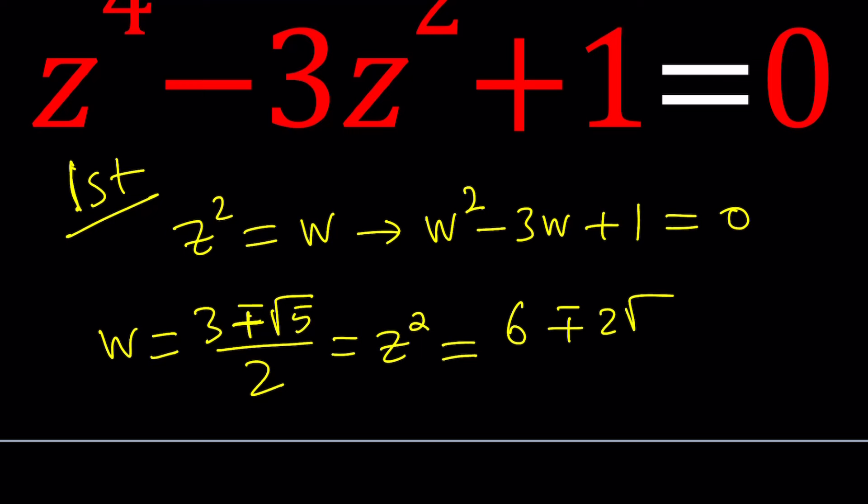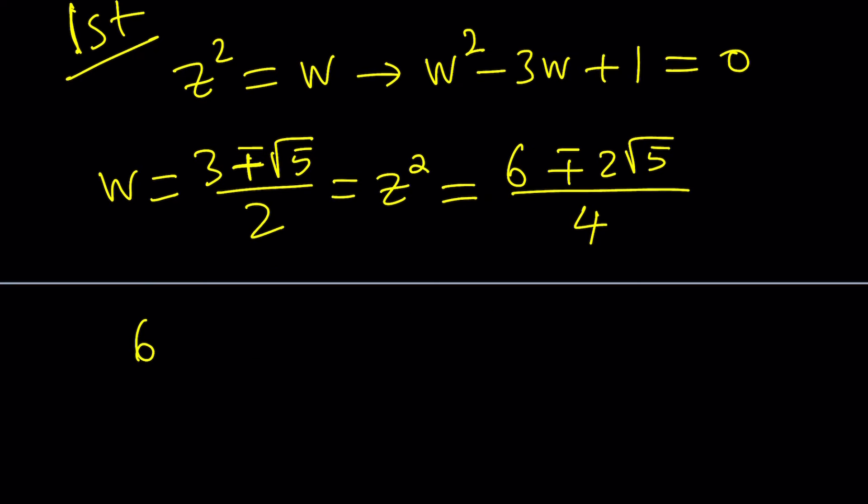For example take 6 plus 2 root 5 - this can be written as 5 plus 2 root 5 plus 1, and it's actually root 5 plus 1 quantity squared. So 6 plus 2 root 5 is a perfect square, so when I take the square roots here I'm going to be getting nice results.